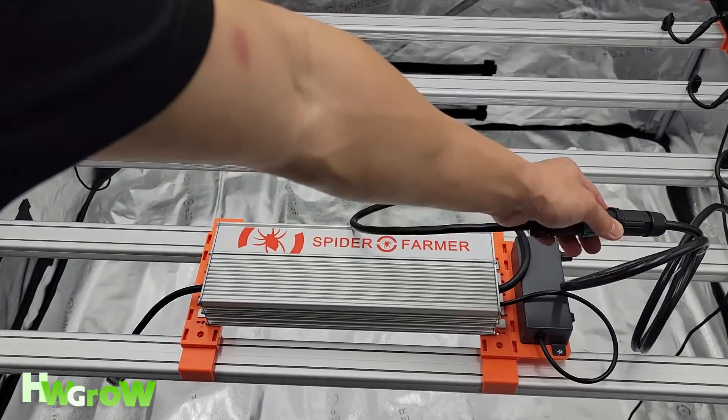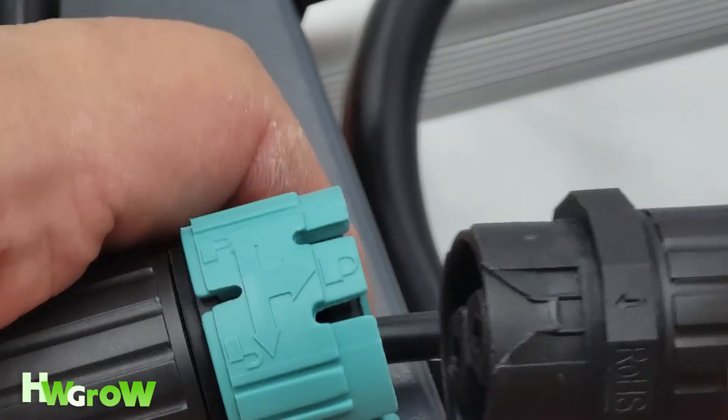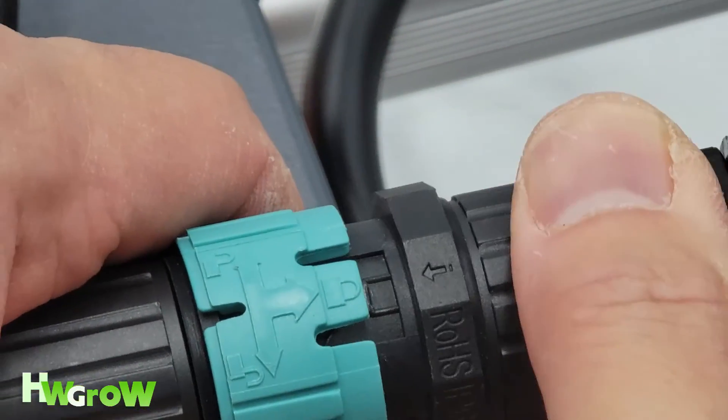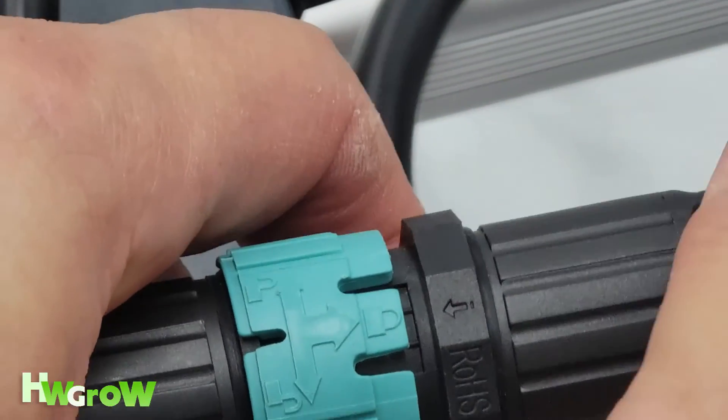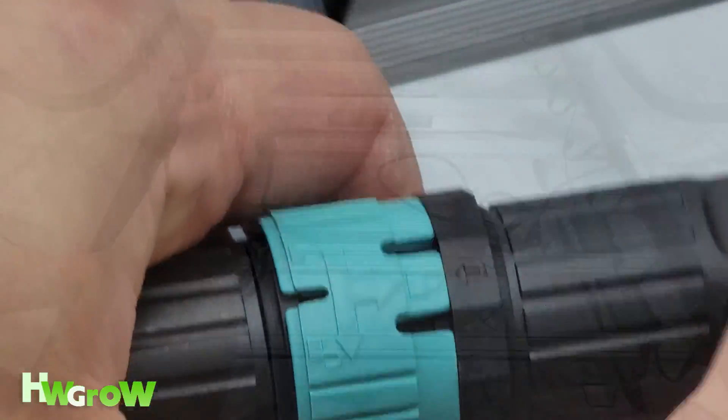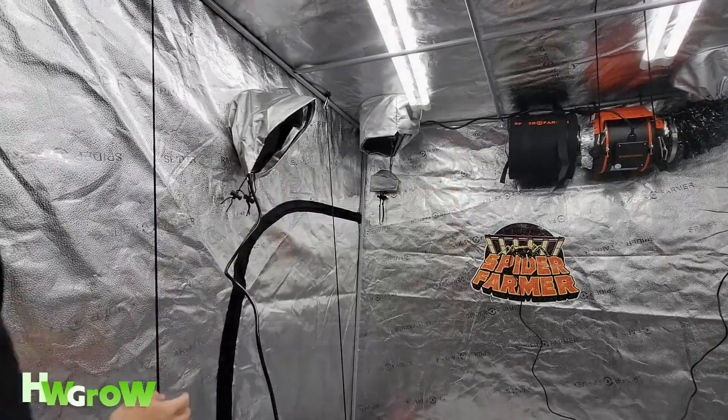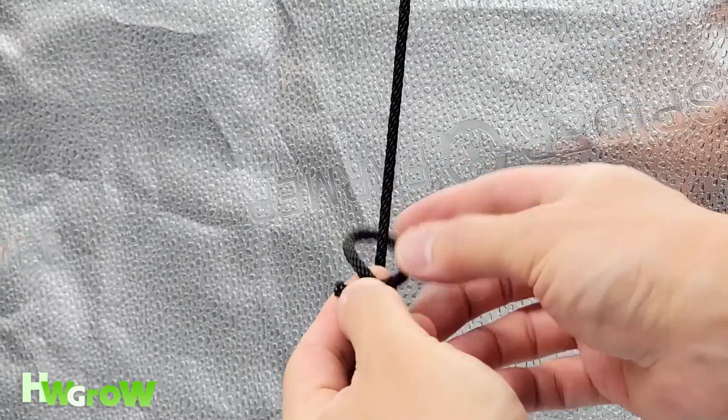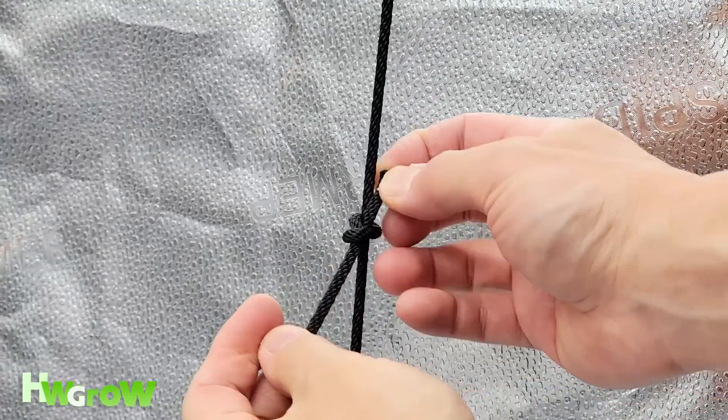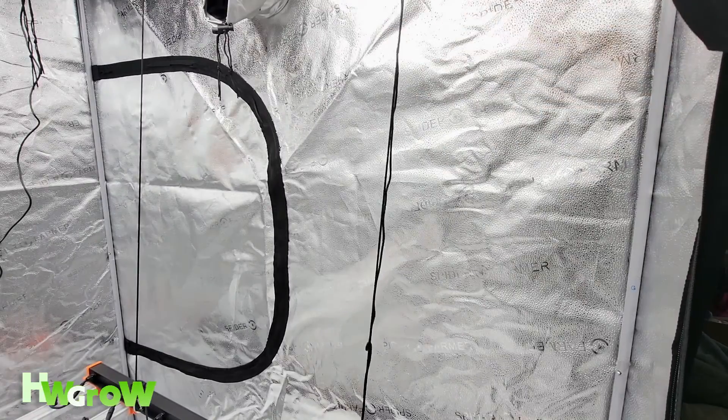Now connect the driver by pushing the cable in so that the lock and the arrow icons align. You should feel a slight click when you're pushing it in. Now you can organize your cords, and I like to tie the excess slack of the ropes by tying a simple knot and sliding it tight.